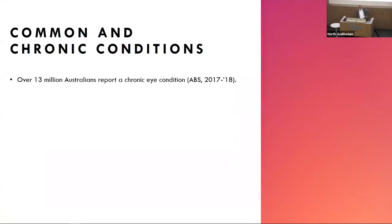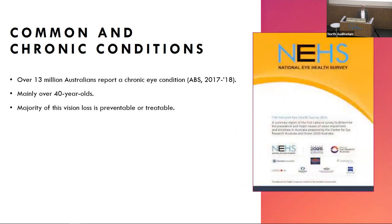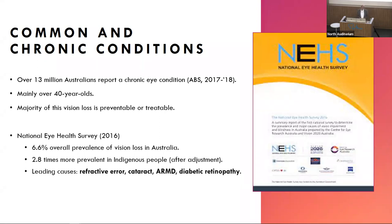Chronic eye conditions are common. An ABS report from only a few years ago suggested that over half the population have some chronic eye condition - that might just be a need for glasses, but it might be more serious. It mainly affects over-40-year-olds, and most of it is preventable or treatable. The most recent National Eye Health Survey showed overall 67% vision loss in Australia, which is really good by international standards, just reflecting us being a developed economy.